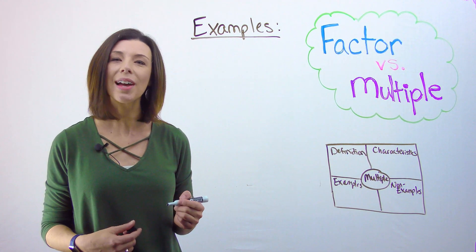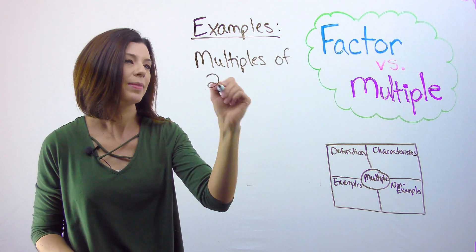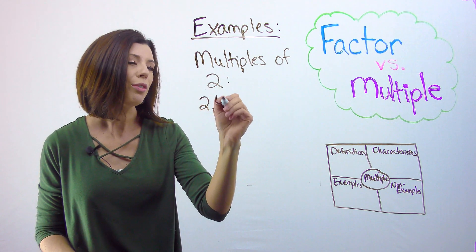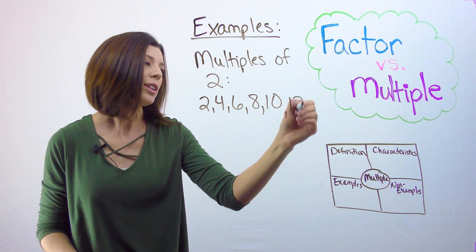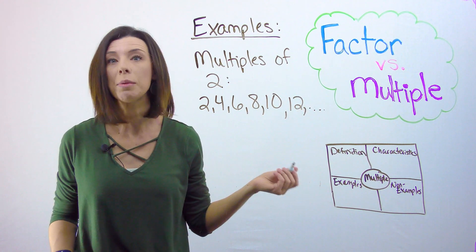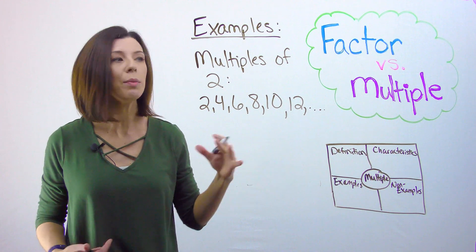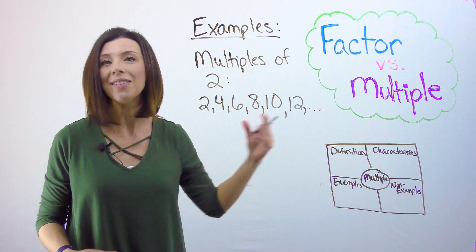So let's start with an example. Here would be multiples of 2. We would have 2, 4, 6, 8, 10, 12. We could keep going literally forever. It would go until positive infinity.